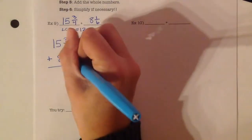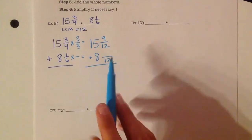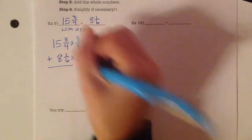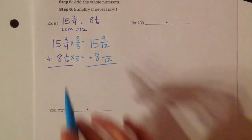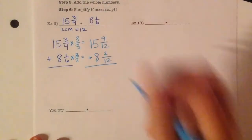Down here, I have to multiply the numerator and denominator by something to get to 12. 6 times what is 12? 6 times 2. If I multiply the denominator by 2, I have to multiply the numerator by 2. 1 times 2 is 2.